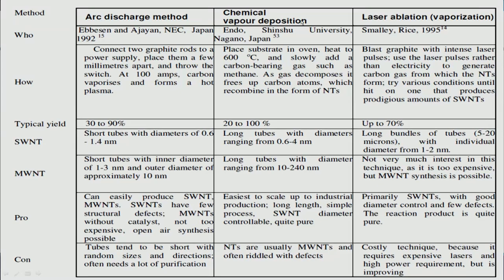In the chemical vapor deposition method, a substrate is placed in an oven heated to 1680°C, and a carbon-bearing gas such as methane is slowly added. As the gas decomposes, it produces carbon nanotubes. The yield is 20 to 100%, and long tubes with diameters of 10 to 240 nanometers are obtained. It is the easiest method to scale up for industrial production and produces high-purity material.